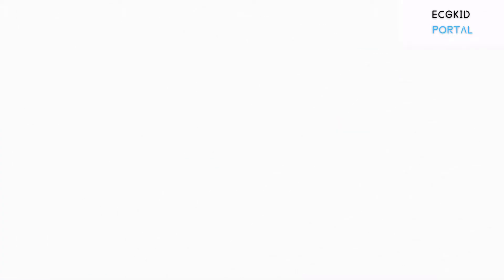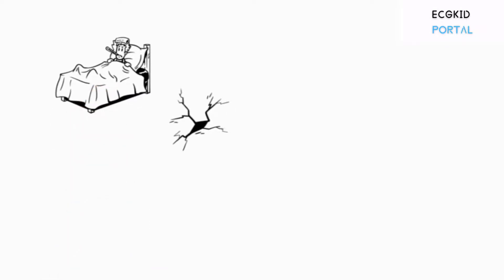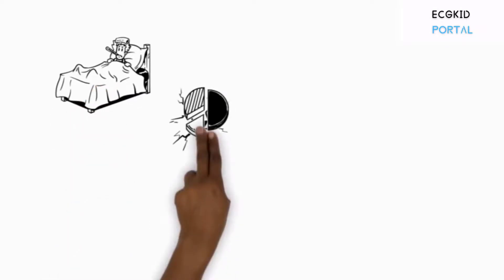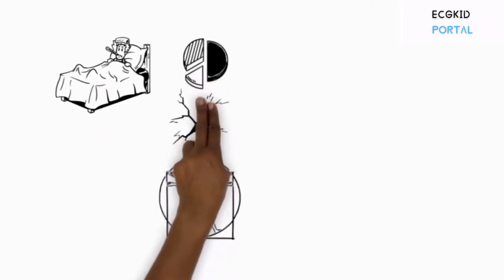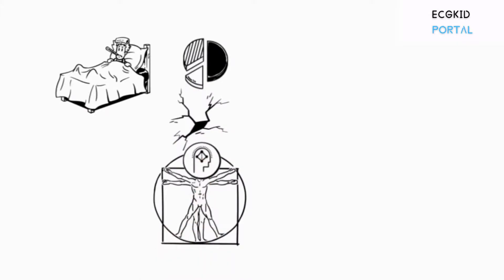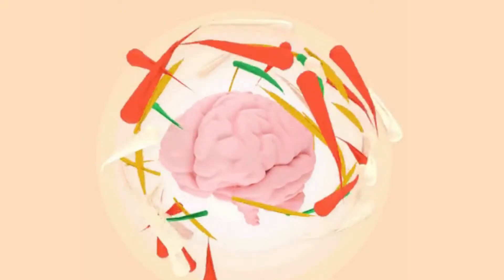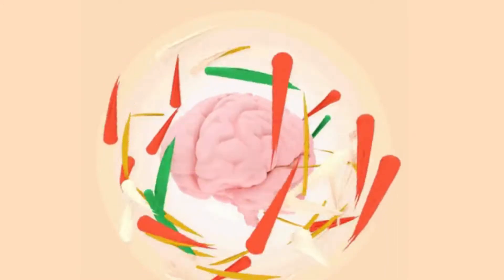Both types of stroke damage brain cells, and symptoms of that damage start to show in the parts of the body controlled by those brain cells. In the next video, we will discuss stroke in more detail.